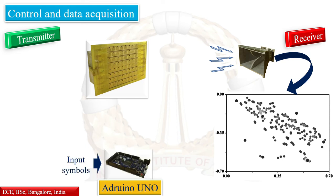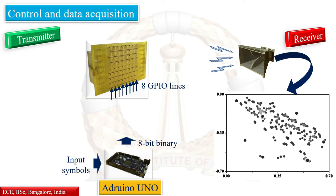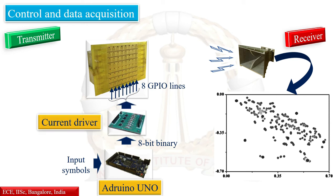An Arduino Uno controller is used to generate signals required to switch these diodes. Based on preliminary simulations, we have used a common signal to switch all diodes in one column of the array. In this experimental demonstration, we used 8 such columns. Therefore, 8 GPIO lines from the controller, with an appropriate current control circuit, are used to switch these columns.